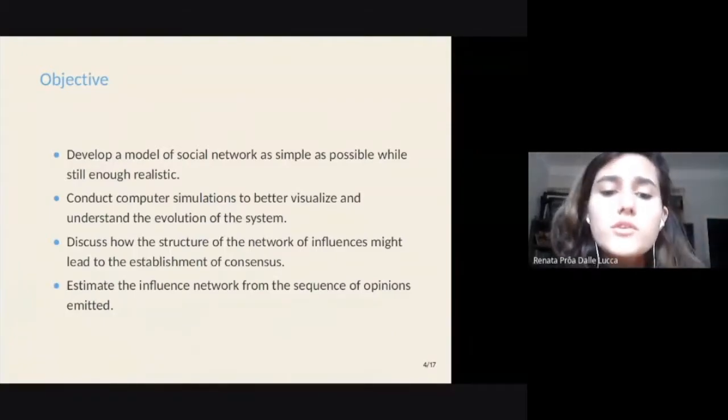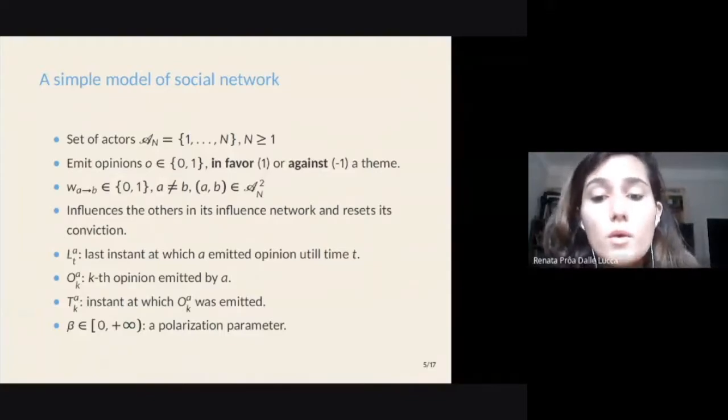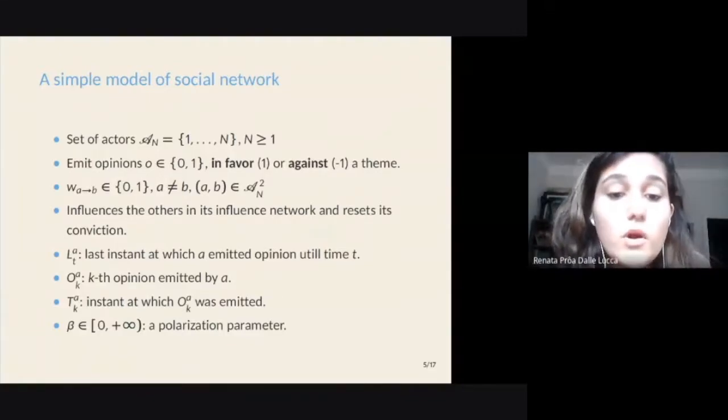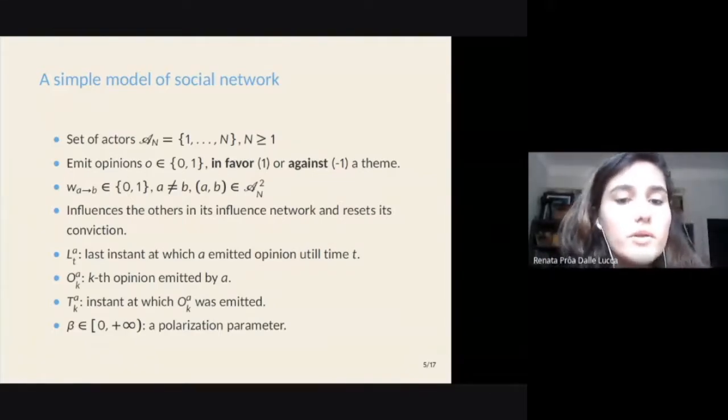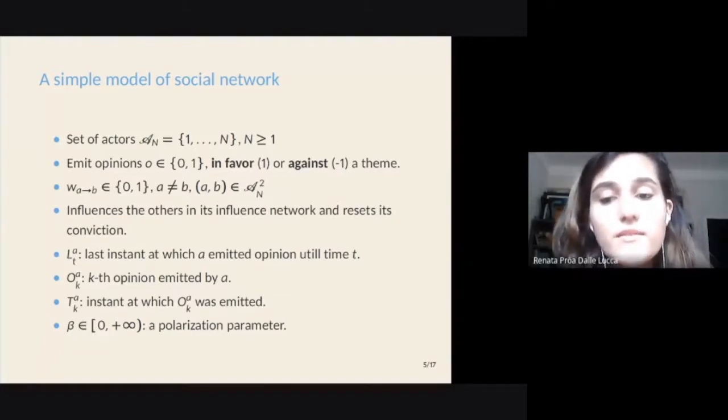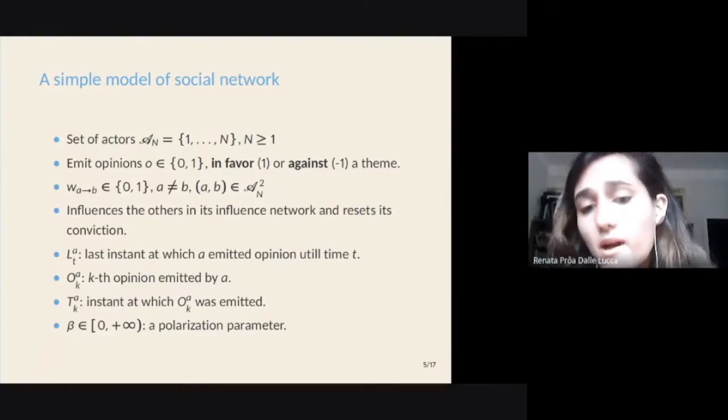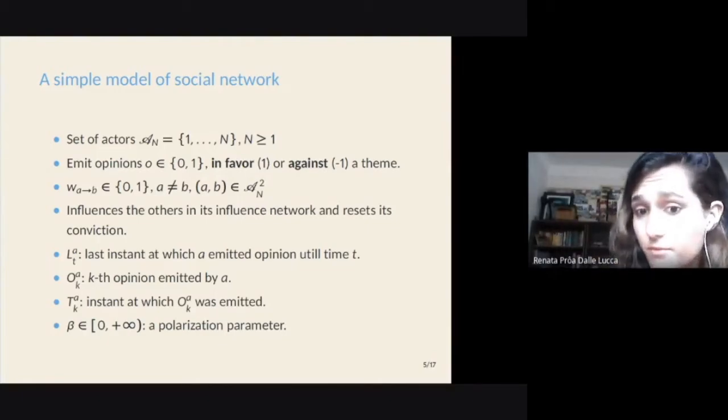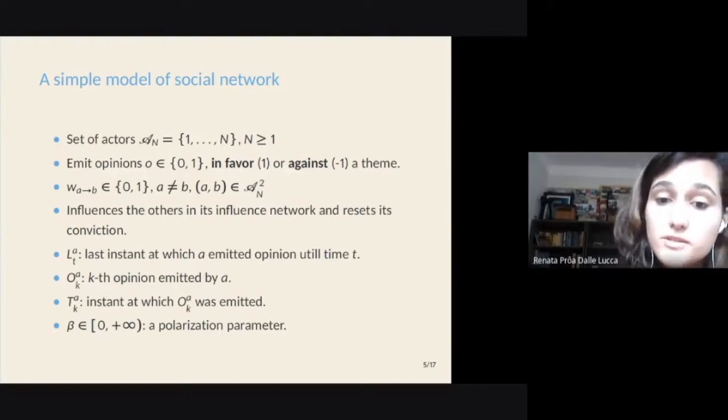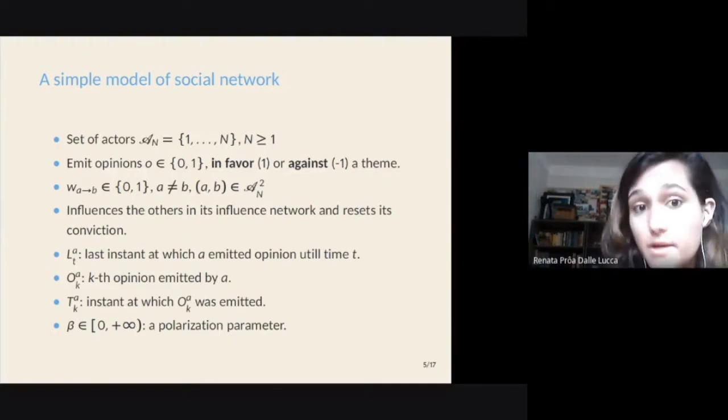So to construct our model of social network, we'll first consider a set of subjects which we'll call social actors that opine on a single theme. So in our model, at each time t, an actor emits its opinion on this given theme, and this opinion can be either in favor or against. By emitting its opinion, an actor influences many others on its network of influences, and then resets its conviction to zero, awaiting for the others to react.